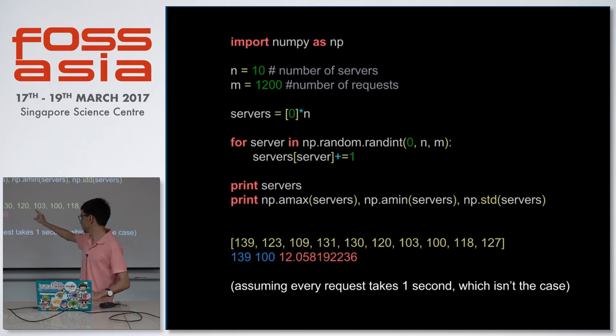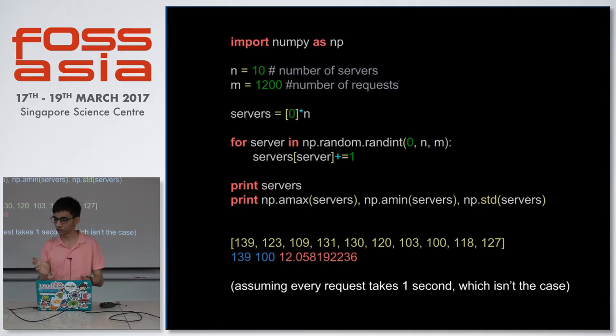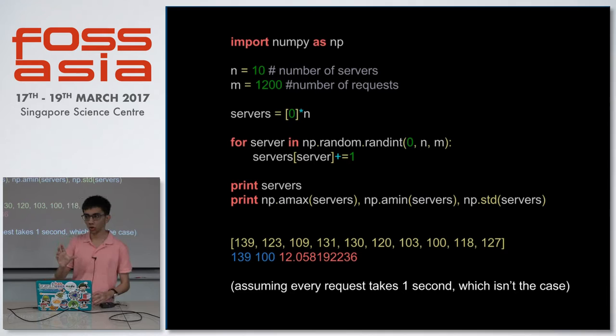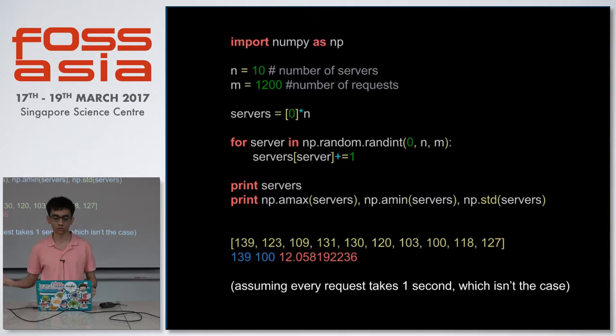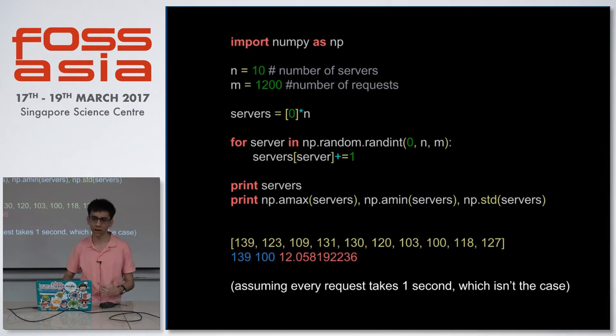On a random run, the maximum load a server is getting is 139 and the minimum is 100, with a standard deviation of 12. There is a 39-request difference between the extremes, which is actually quite a lot. What you actually want in load balancing is all of the servers to have equal load, because in many cases servers may have the same resources — the same memory etc. — so load should be balanced equally. Also, this has a limitation: I'm treating all requests as equal, which is not the case since any request can take any amount of time.